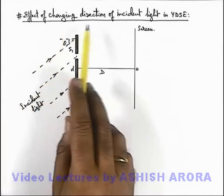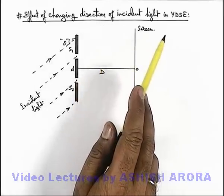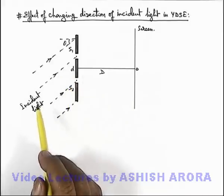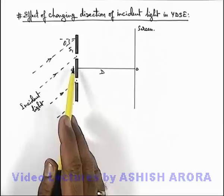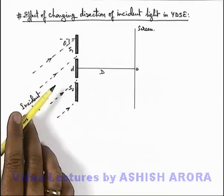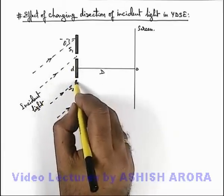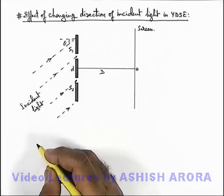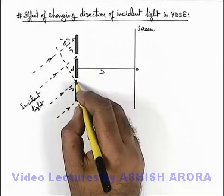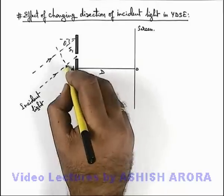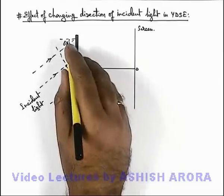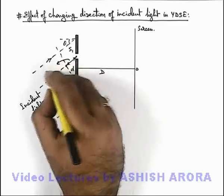Let us now discuss the effect of changing the direction of incident light in YDSE. Here we can see a typical YDSE setup in which the slit plane is illuminated by light incident at an angle of incidence theta to the normal. If the incident light is inclined, out of the 2 slits, slit S2 will be illuminated first, then slit S1. When a wavefront is incident on the slit plane and illuminates source slit S2, the point in the same phase as S2 is at a distance d·sinθ behind slit S1.